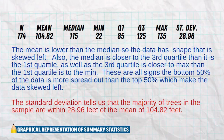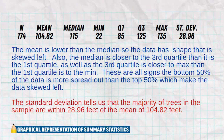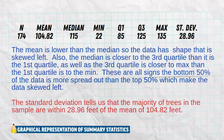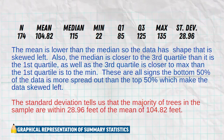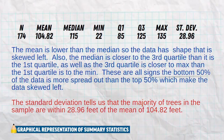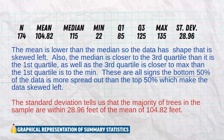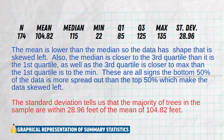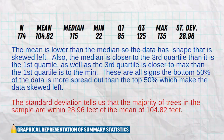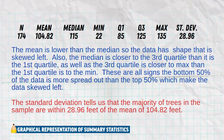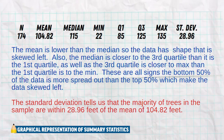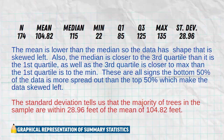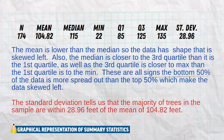We also notice that the third quartile is closer to the max than the first quartile is to the min, meaning the distance between the first quartile and the min is extremely far, which shows that the left side of the data is more spread out. All signs point to the bottom 50% of the data being more spread out than the top 50%, which makes the data skew to the left.